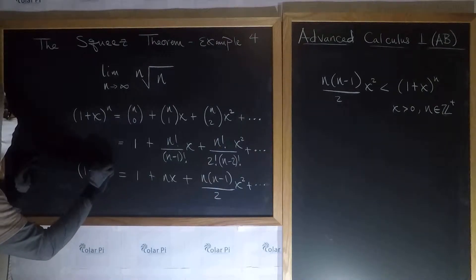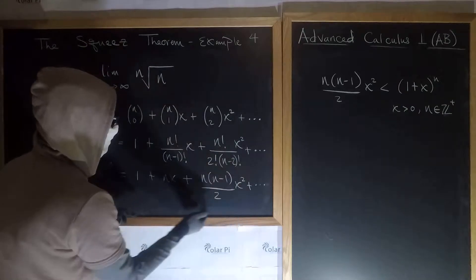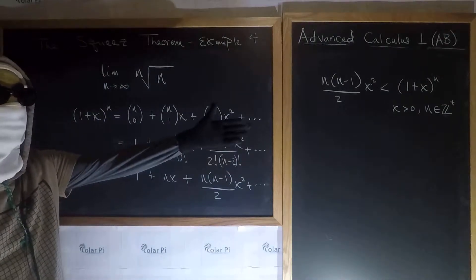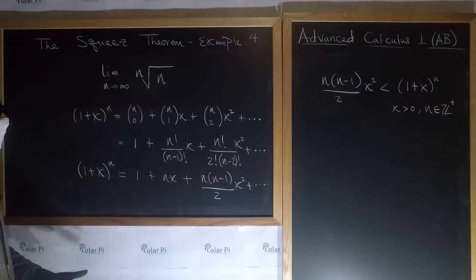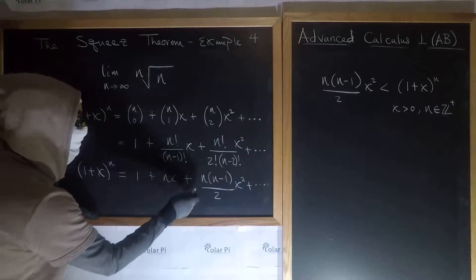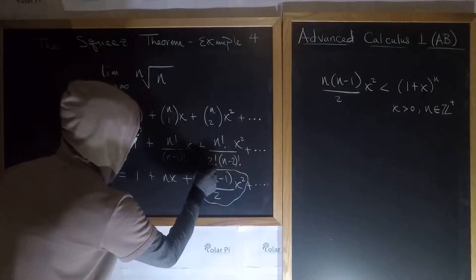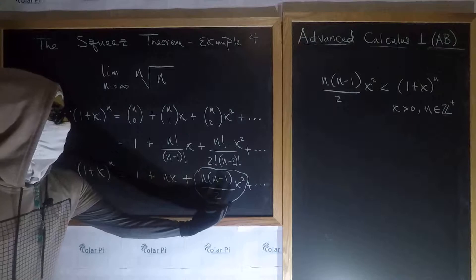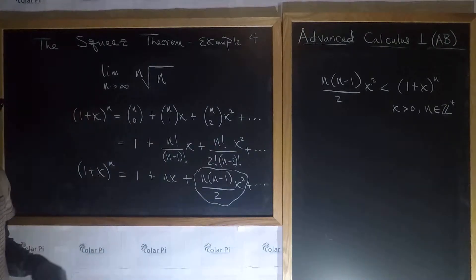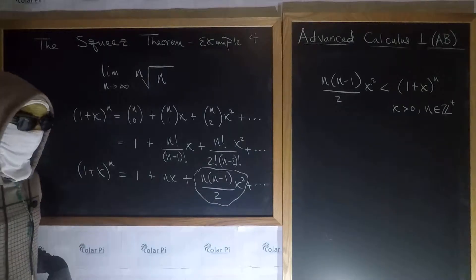So this is 1 plus x to the n. So 1 plus x to the n has these terms and more, and they're all positive because we said x is greater than 0 and n is a positive integer. And so clearly, this here, which is these guys and more, has to be bigger than just this guy, right? And that's a statement there. We're saying that this guy alone is less than all of these guys together. Where to from here?